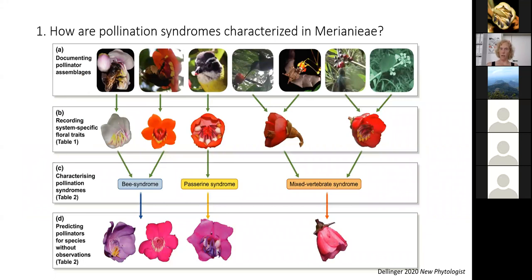Once you have these syndromes established and know the traits, you can use the same algorithms to predict pollinators for species where you simply cannot observe them due to time constraints. It would be nice if all of us could just be in the field doing so much fieldwork, but I fear that's not going to happen anytime soon.